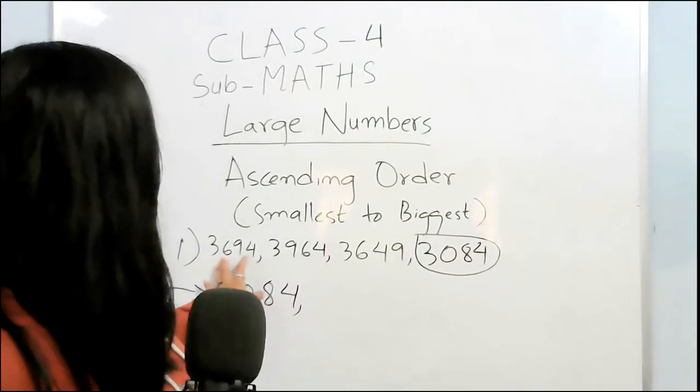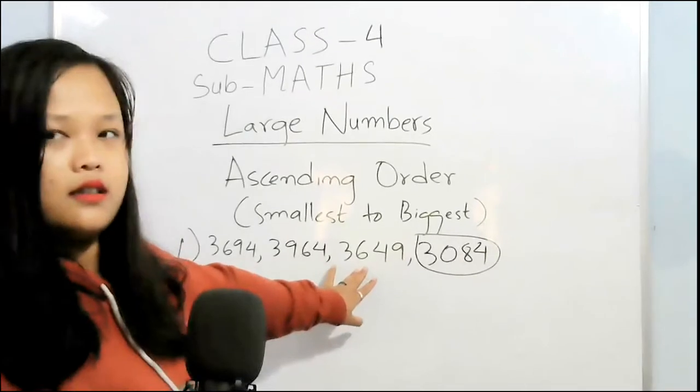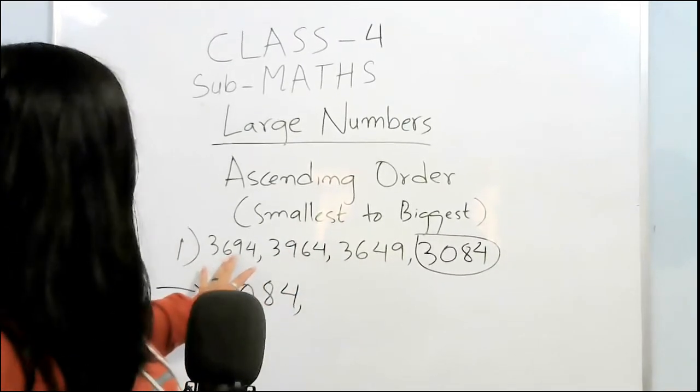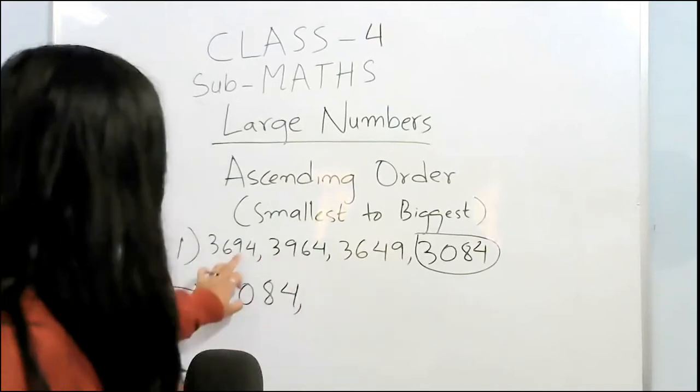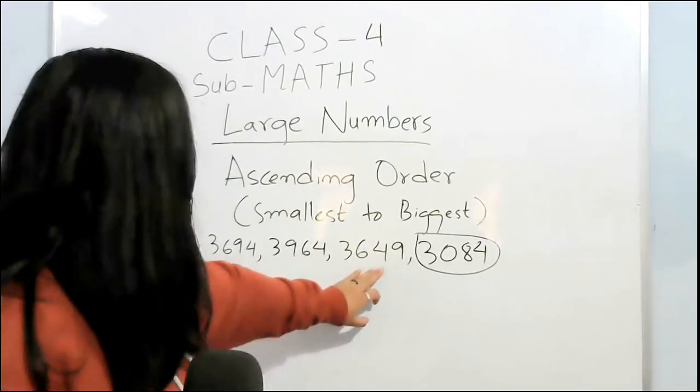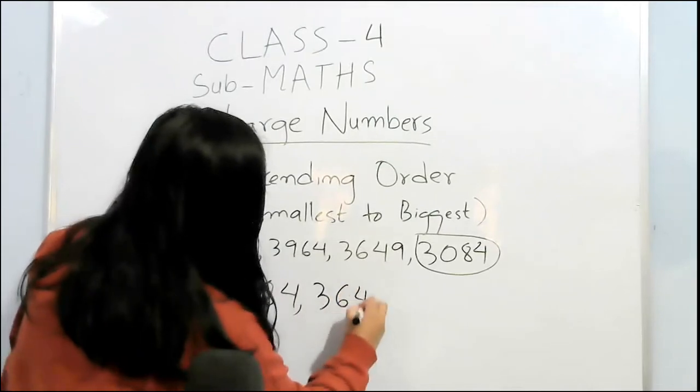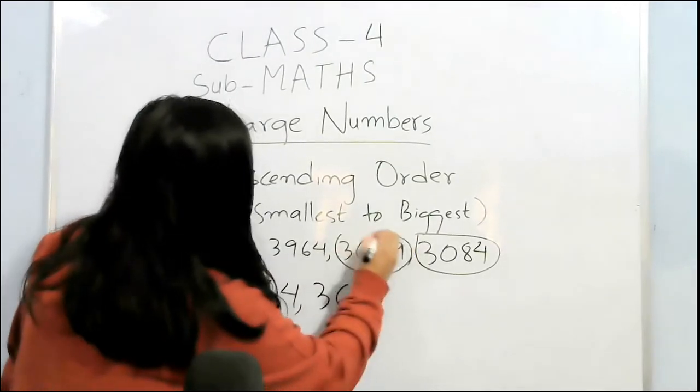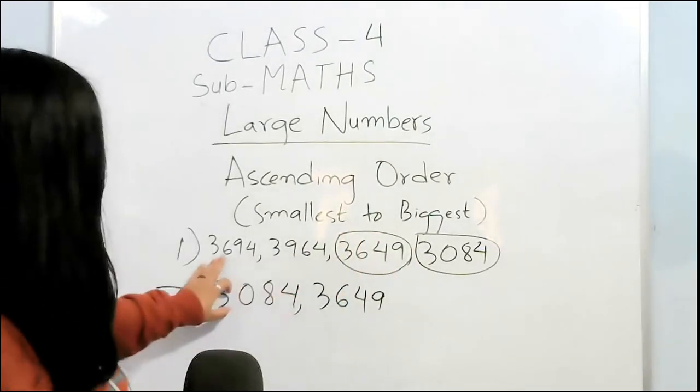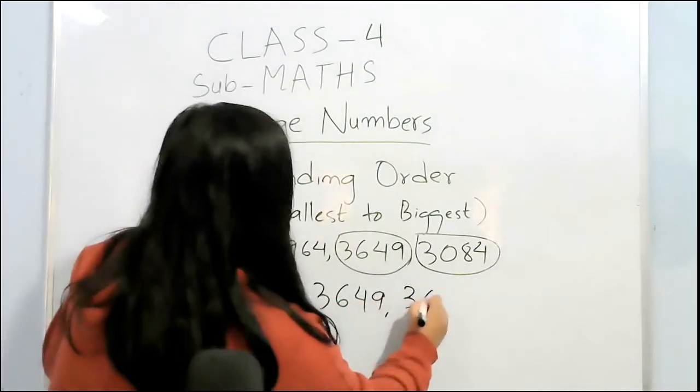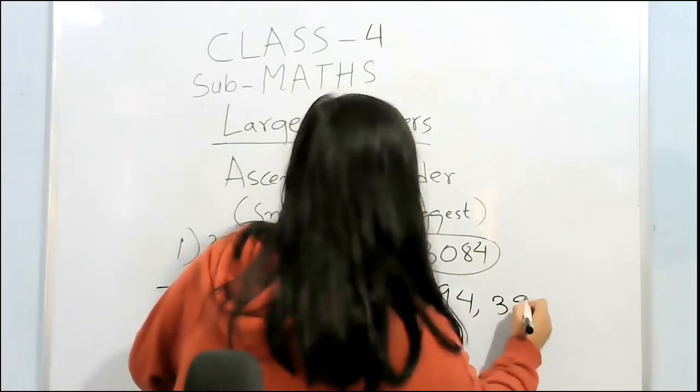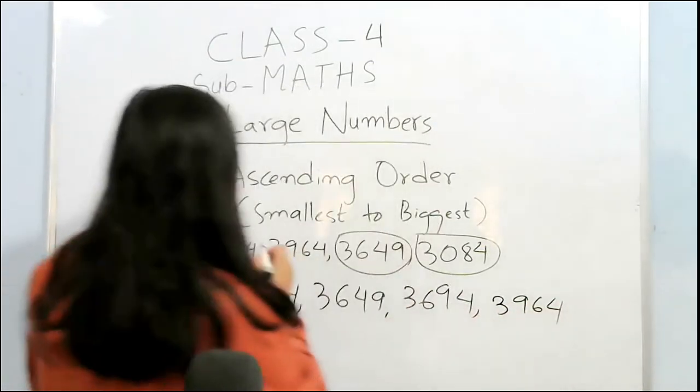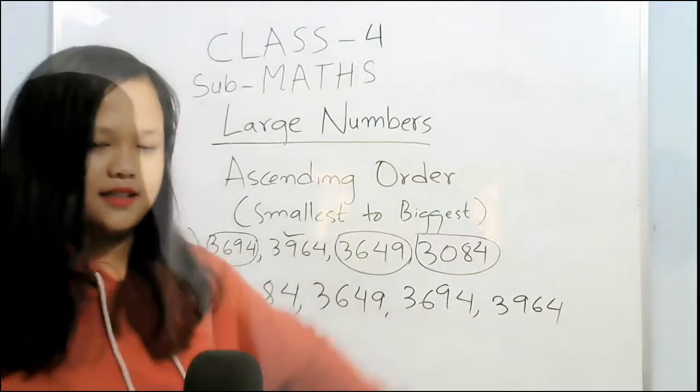And the remaining, you check it. 6, this is also 6. So both are same, so the next one, this one is 4 and this one is 9. So you have to write this one. And next is this. This is the biggest, so it should be the last.